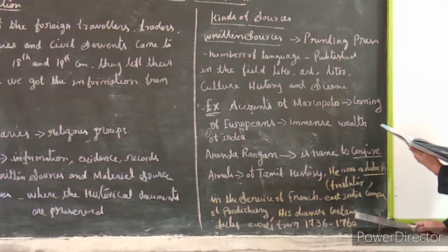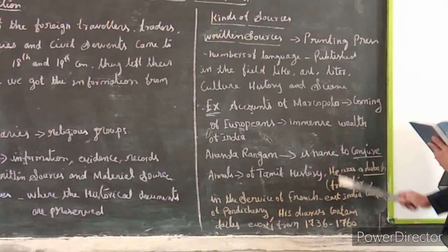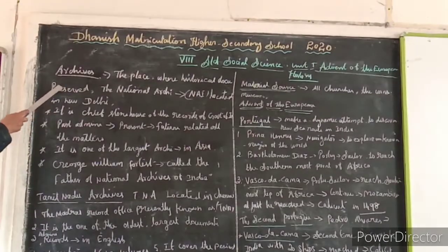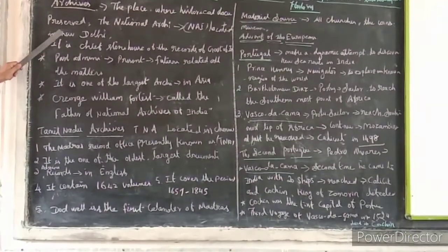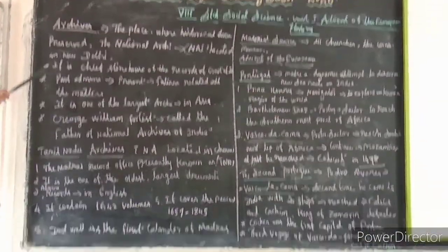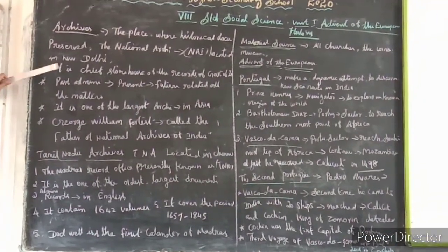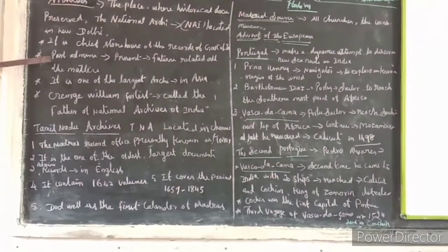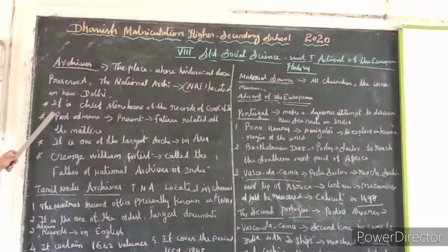A pamphlet is a small booklet. Some of these give information about the past history and coming or arrival of the Europeans. Archives are places where historical documents are stored. The National Archive of India — the NIA — is located in New Delhi. The NIA is known as the chief store of records of the Government of India. It contains information not only about past administration but also present and future related matters.